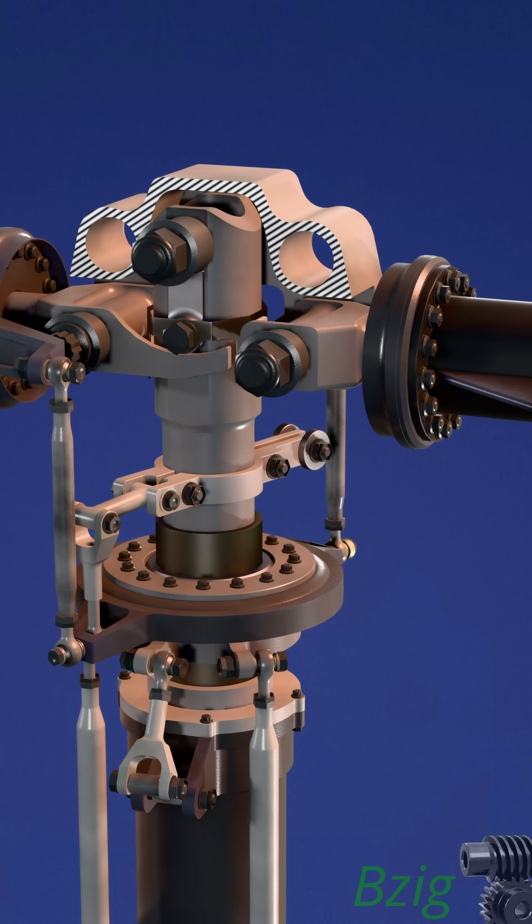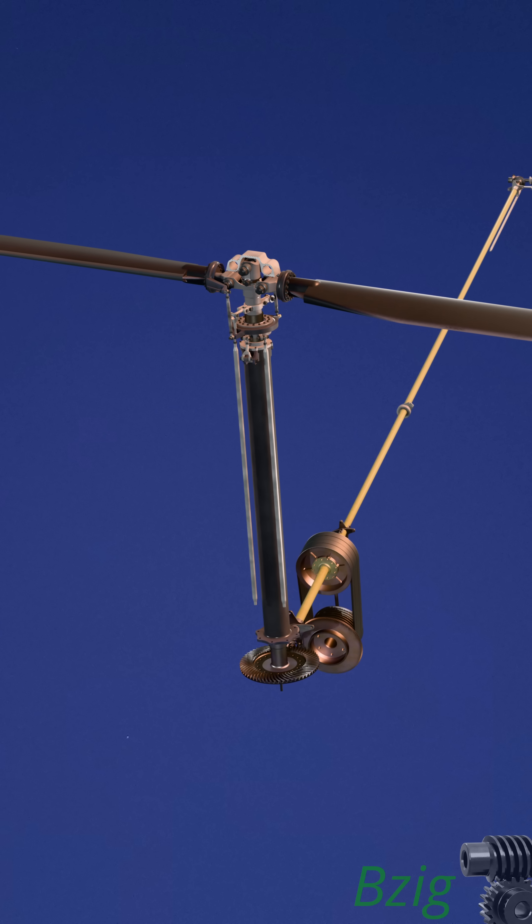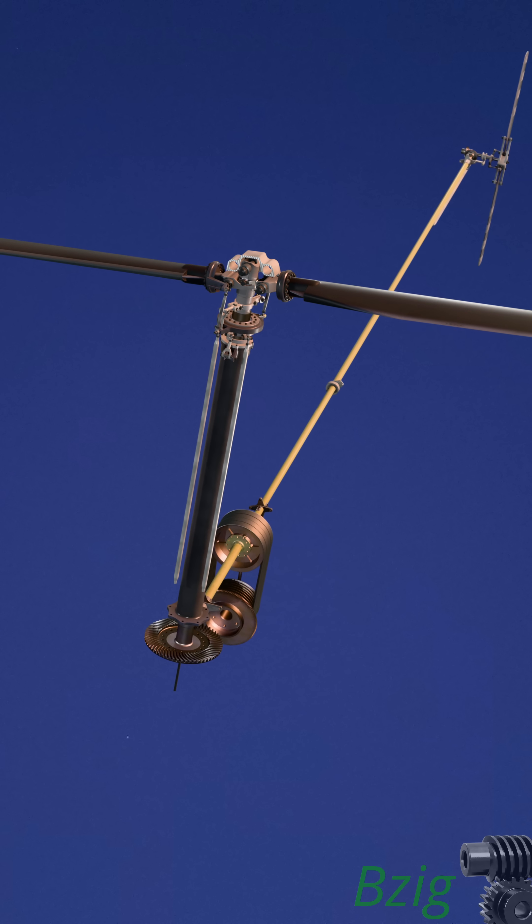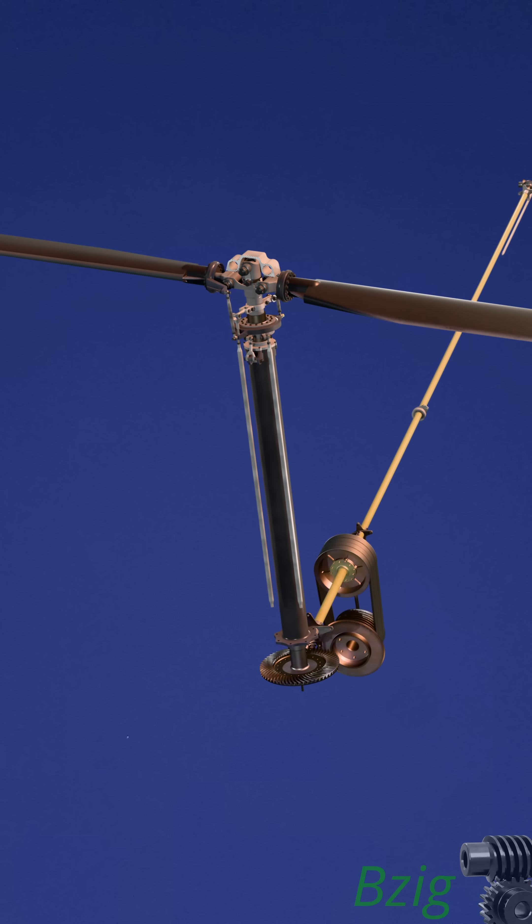The result is that the rotor disk, under low-g conditions, changes attitude, but the fuselage does not. And the mast is rigidly connected to the fuselage, so an excessive angle between the rotor disk and the fuselage will result in mass bumping.